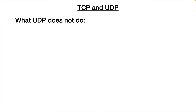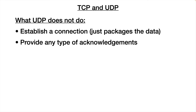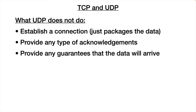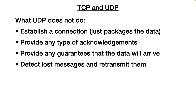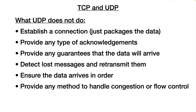What does UDP not do? It doesn't establish a connection — there's no persistent connection for communications, it just packages the data up and sends it. There's no mechanism to do acknowledgments, and it does not provide any guarantee that the data will arrive. It has no mechanism to detect lost messages and have them retransmitted. It does not ensure the data arrives in order — so if we send packets 1, 2, 3, 4, 5, 6, they may arrive as 1, 3, 2, 5, 4, 6. And there is no flow control or any mechanism to deal with congestion in the network.